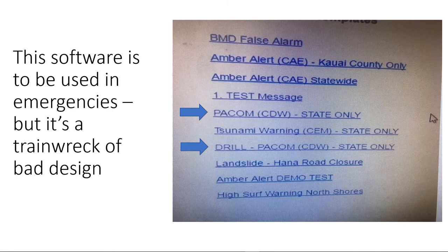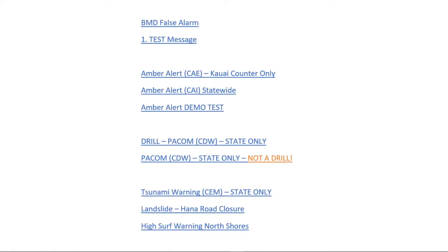This is a train wreck of bad design. The immediate problem that caused the mistake is that the user pressed the option next to the top arrow instead of the similarly named drill at the bottom arrow. Why is the actual event higher than the drill, which is much more commonly used? Any competent designer and most competent developers could create a far better interface in only an hour or so.